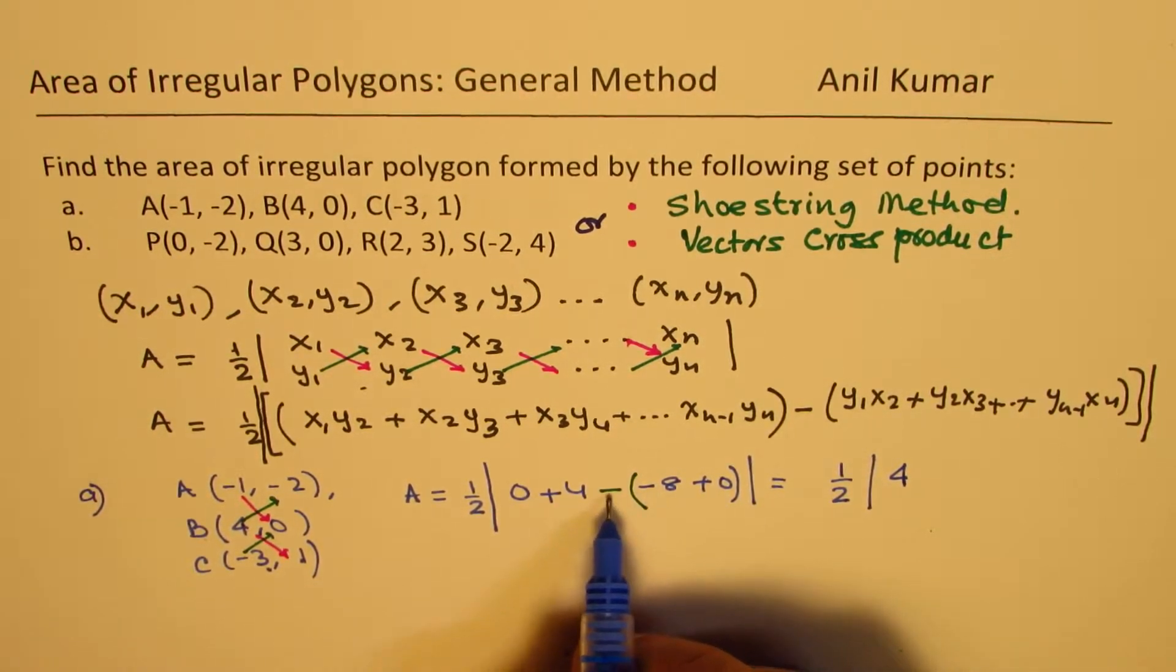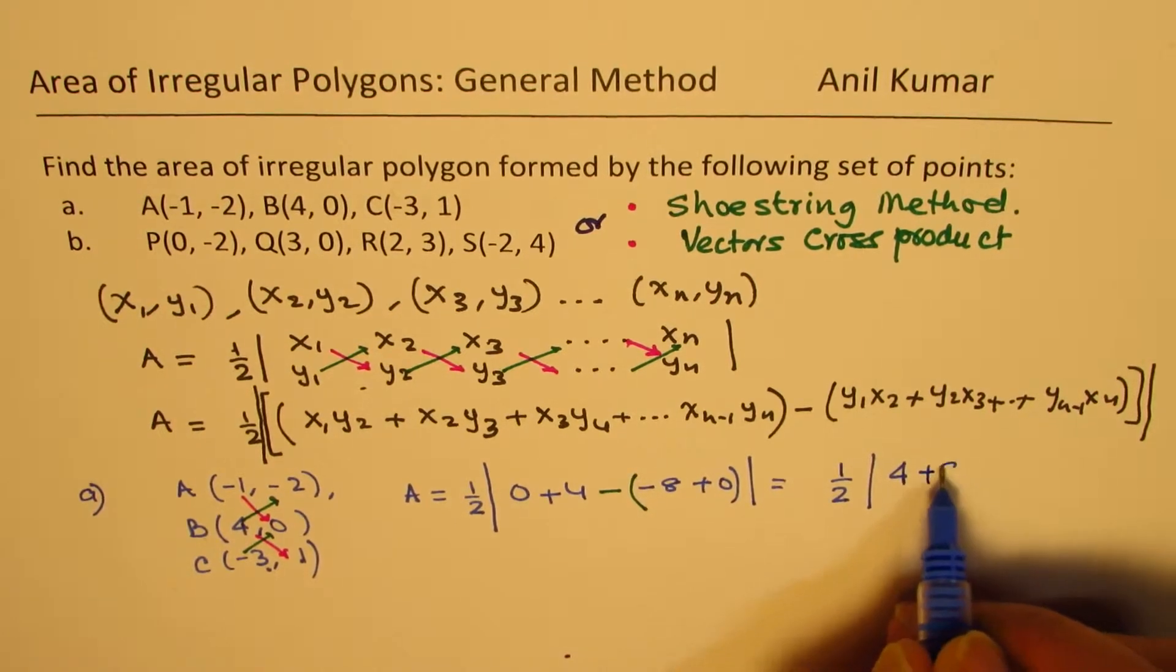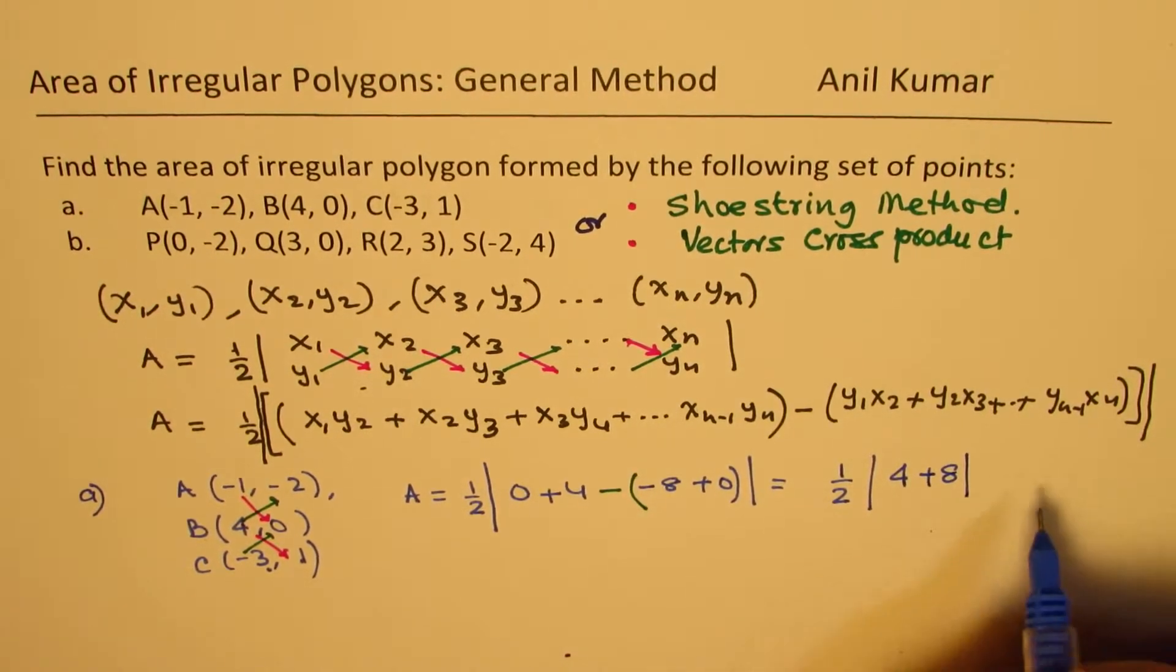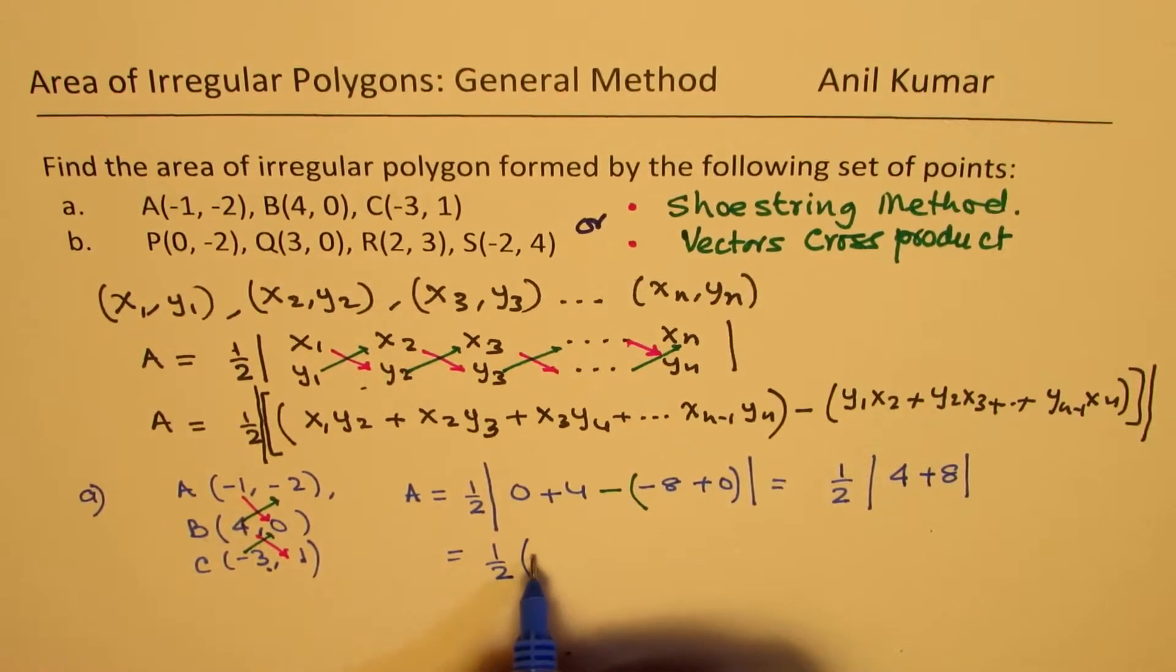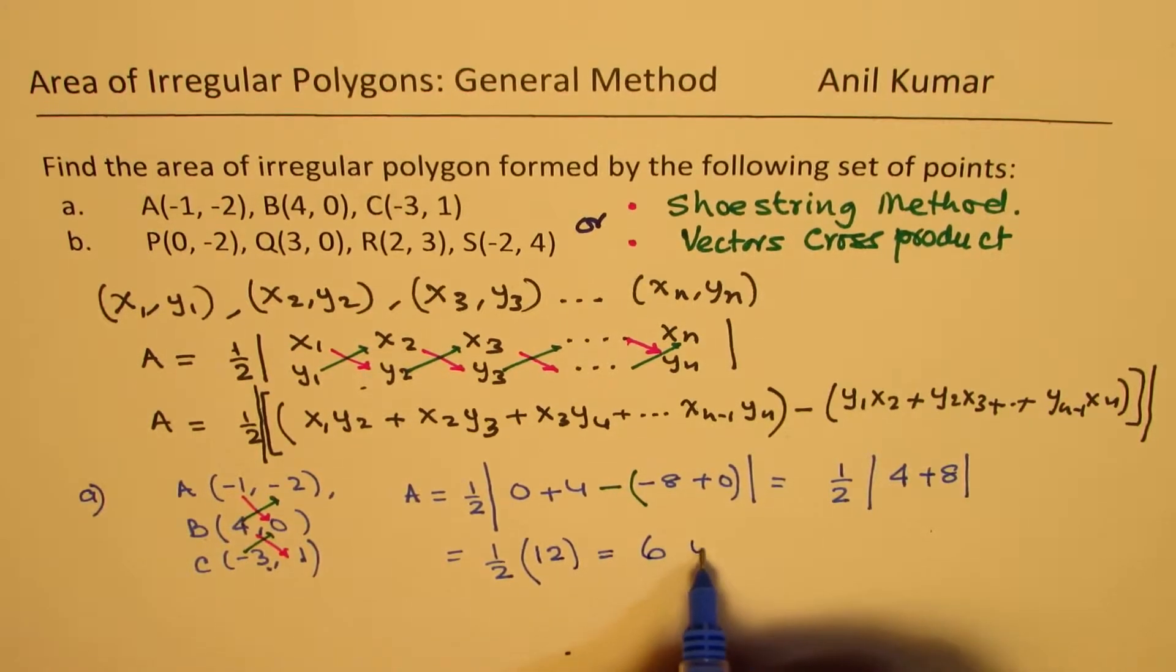And inside, we have minus 8, with minus 8 becomes plus 8. That is equal to half of 8 plus 4 is 12, and that is 6 units squared.